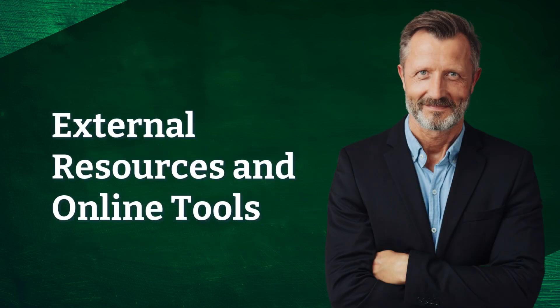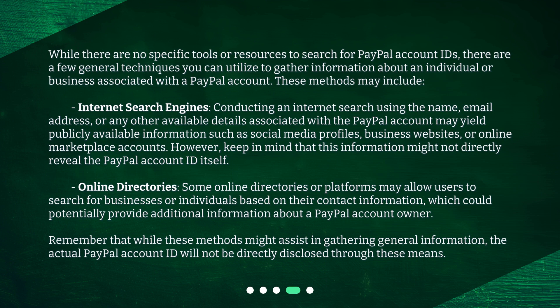External Resources and Online Tools. While there are no specific tools or resources to search for PayPal account IDs, there are a few general techniques you can utilize to gather information about an individual or business associated with a PayPal account. These methods may include internet search engines — conducting an internet search using the name, email address, or any other available details associated with the PayPal account may yield publicly available information such as social media profiles, business websites, or online marketplace accounts. However, keep in mind that this information might not directly reveal the PayPal account ID itself. Some online directories or platforms may also allow users to search for businesses or individuals based on their contact information, which could potentially provide additional information about a PayPal account owner. Remember that while these methods might assist in gathering general information, the actual PayPal account ID will not be directly disclosed through these means.